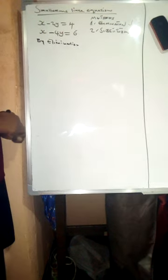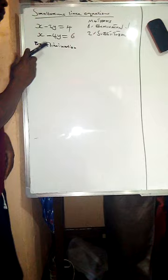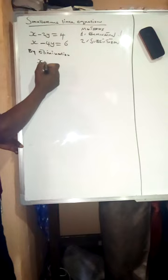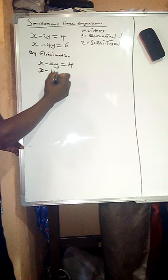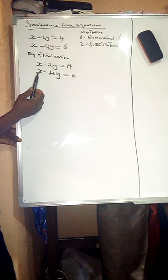Welcome friends. This time around we're going to eliminate these three particular equations. The first one is x minus 2y equals 4, and the second one is x minus 4y equals 6. Now take note — in the first session we started by finding the value of y.